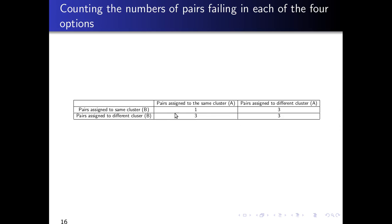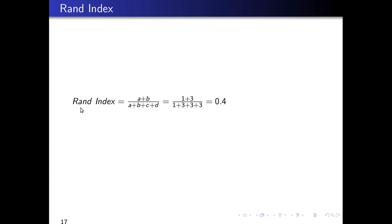Now we can fill in the table. We have A = 1, B = 3, C = 3, and D = 3. After filling in the table, we just plug the numbers into the RAND index formula. The RAND index is defined as (A + B) divided by (A + B + C + D), which is the total number of pairs — n-choose-2, equal to 10. So we have (1 + 3) divided by 10, which equals 0.4.